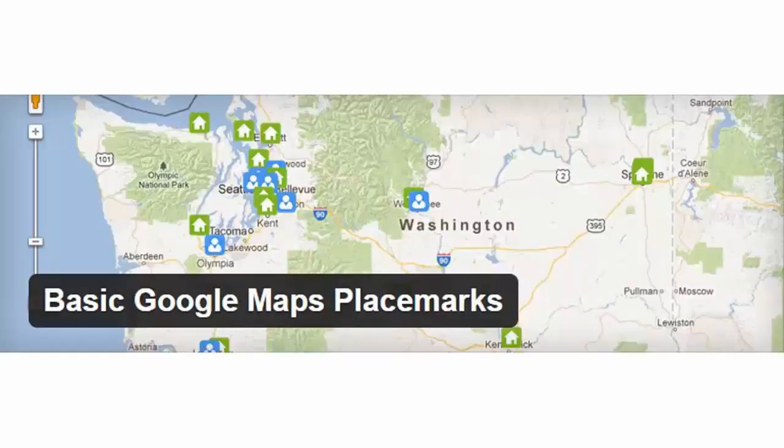Number 6 is Basic Google Maps Placemarks, which allows you to create your own placemarks on your map. You can assign them categories and add custom markers as well.